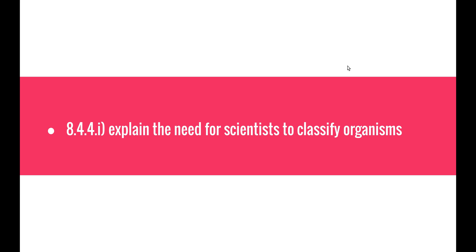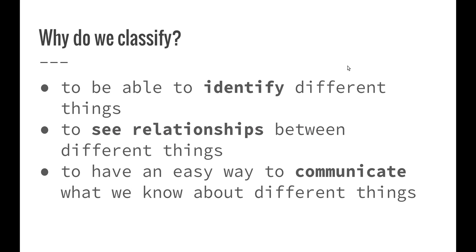Let's have a look at the first one: explain the need for scientists to classify organisms. So what are some reasons why we classify? Being able to classify things, we're able to identify them as being different from other things. We're also able to see relationships between different things, and to have an easy way to communicate what we know about these different things.